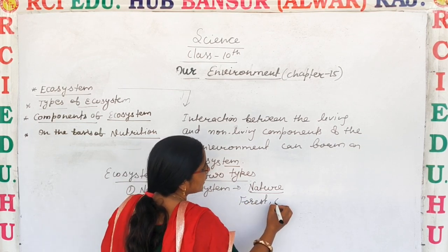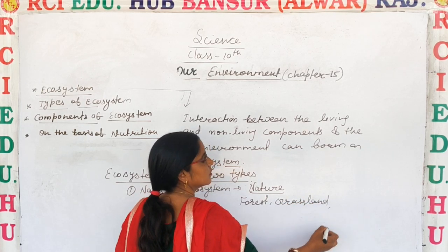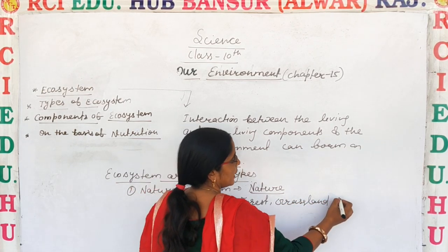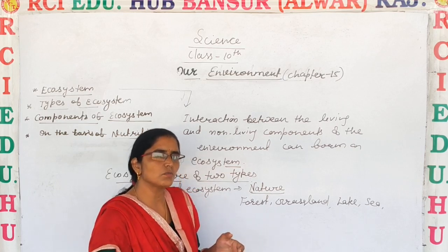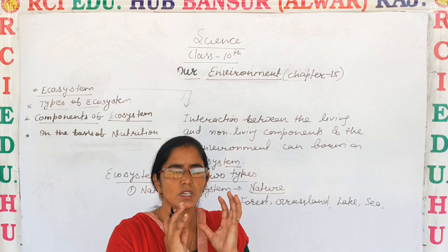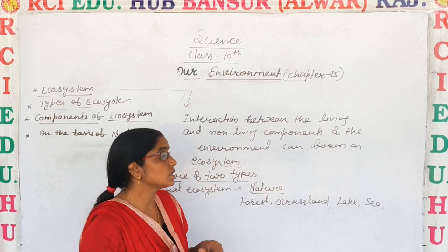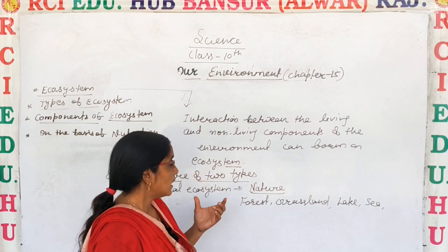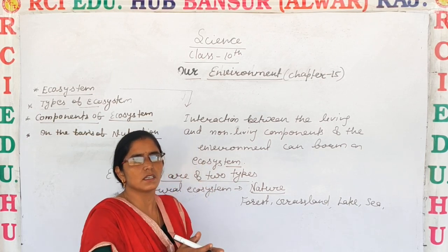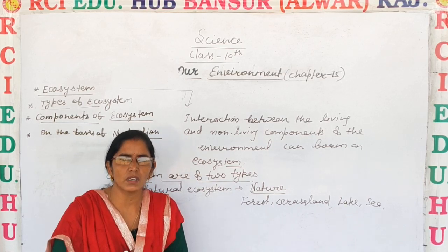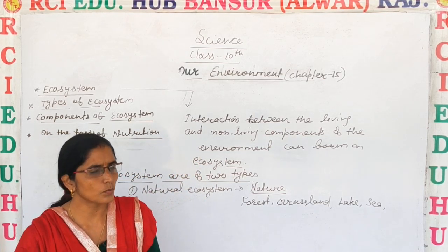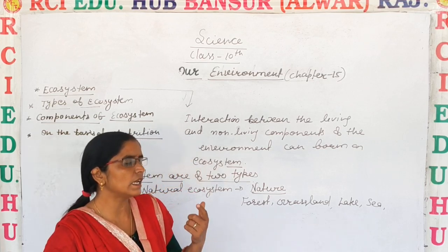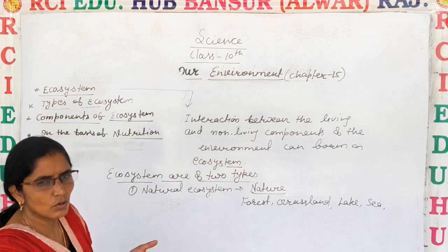Examples of natural ecosystems include grassland ecosystem, lake ecosystem, sea ecosystem, and freshwater or marine water ecosystem. These are ecosystems that already exist in nature, where living and non-living components interact naturally.